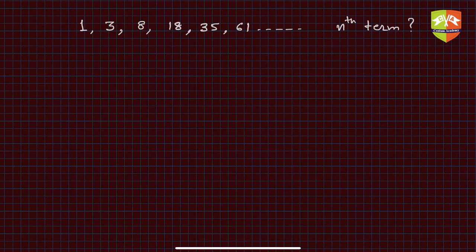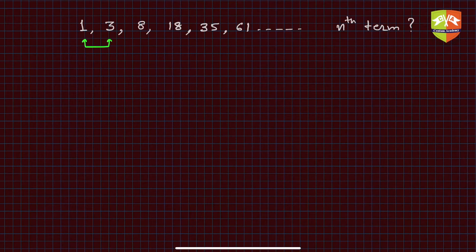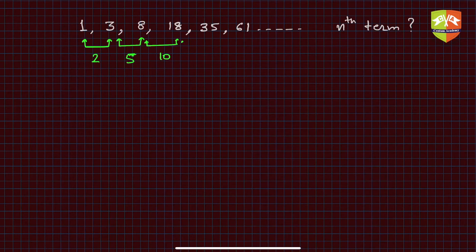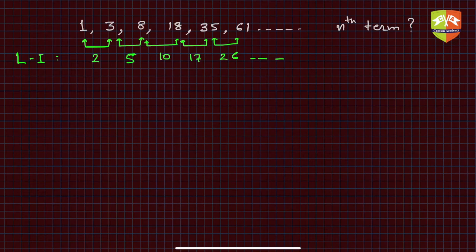The sequence is 1, 3, 8, 18, 35, and 61. In the first appearance it seems to have no trend at all, but on a closer look, if we go with the process of differences: 3 minus 1 is 2, 8 minus 3 is 5, 18 minus 8 is 10, 35 minus 18 is 17, and 61 minus 35 is 26. These are the level 1 differences.